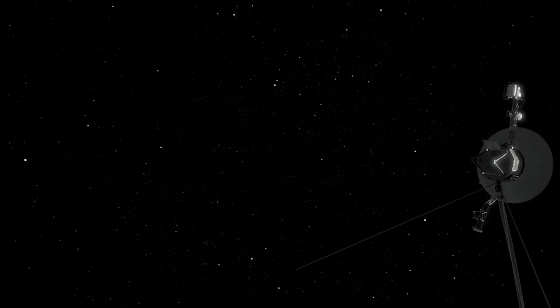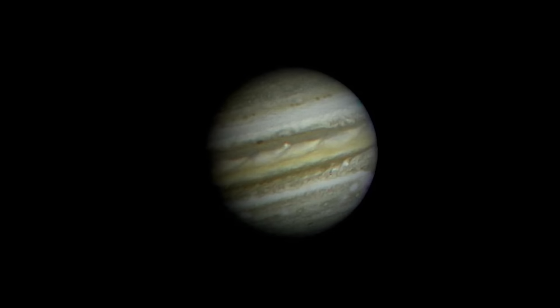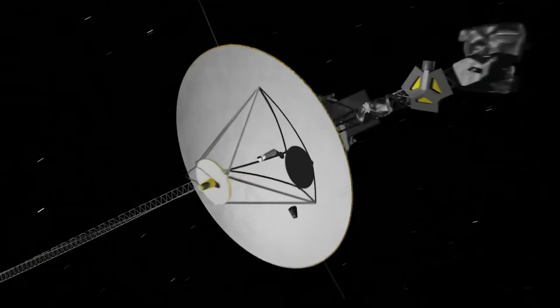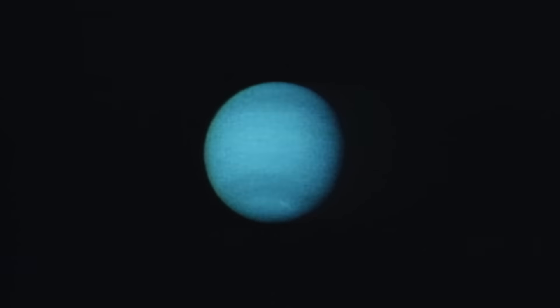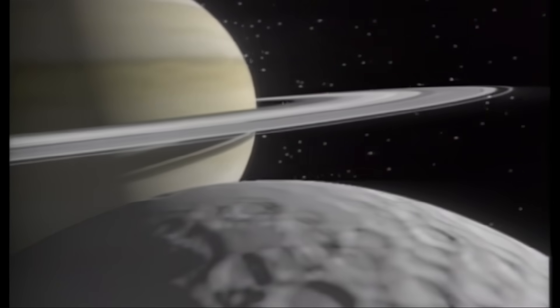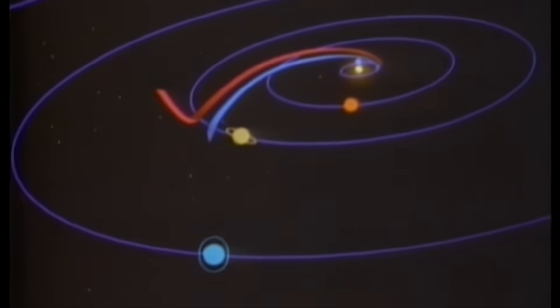Their mission would take advantage of a favorable planetary alignment to explore Jupiter and Saturn. During the mission the destination was changed so that Voyager 2 would fly onto Uranus and Neptune and Voyager 1 would fly past Saturn's moon Titan and be put on a trajectory out of the plane of the solar system and into interstellar space.